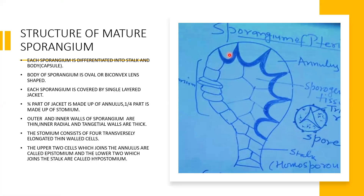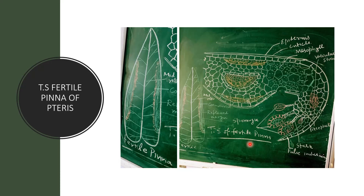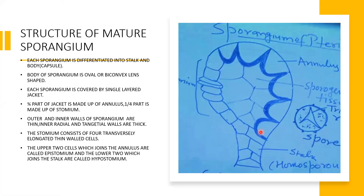These are the sporangia which are borne on the leaf, and the leaf is called a sporophyll. If we see the structure of a sporangium, it is differentiated into a stalk by which it is attached to the receptacle. The body of the sporangium is covered by a jacket. Three-fourths of the jacket is called the annulus, and one part is called the stomium. The annulus is thickened radially and tangentially, while the stomium part is thin.